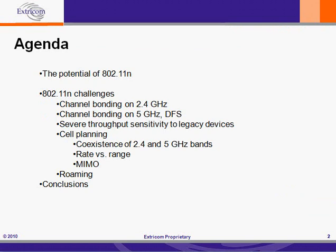First I'll talk about the potential of 802.11n, and in particular I'll describe the main new features that 802.11n brings to wireless LAN. Then I'll talk in detail about the challenges 802.11n poses, in particular the challenges posed by channel bonding on both the 2.4 GHz band and on the 5 GHz band, and the severe throughput sensitivity of 802.11n to legacy devices, and cell planning challenges.